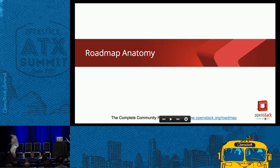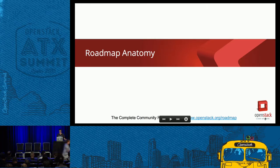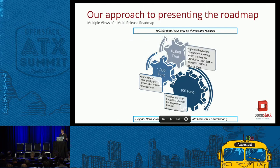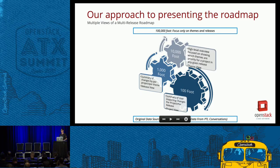I'm going to turn the conversation over to Nate to talk about the details of the anatomy of the roadmap. Today I'll take you through the different views that make up the roadmap — everything from the 100,000 foot view all the way down to the 100 foot view. Think of it as elevation, very macro at the top looking down at the planet of OpenStack.